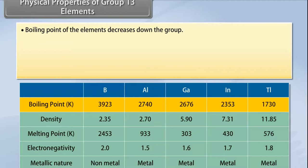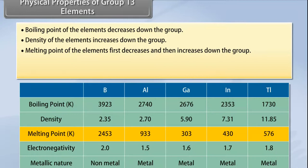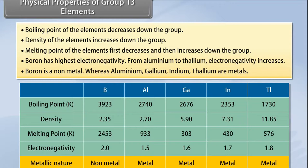Physical properties of group 13 elements: Boiling point decreases down the group. Density increases down the group. Melting point first decreases and then increases down the group. Boron has the highest electronegativity; from aluminium to thallium, electronegativity increases. Boron is a non-metal, whereas aluminium, gallium, indium, and thallium are metals.